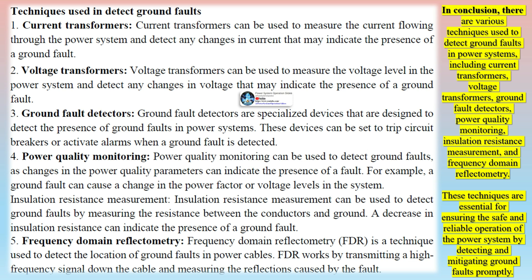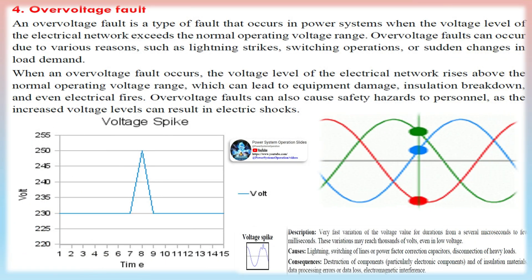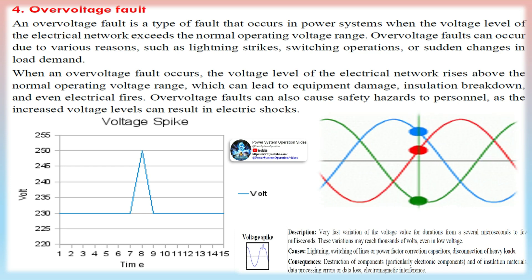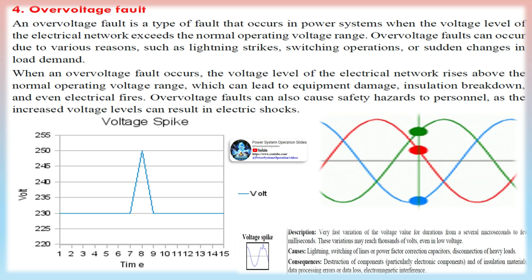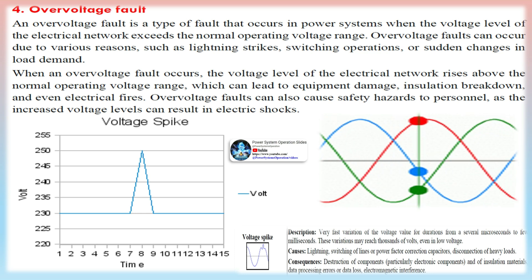In conclusion, there are various techniques used to detect ground faults in power systems, including current transformers, voltage transformers, ground fault detectors, power quality monitoring, energy monitoring, insulation resistance measurement, and frequency domain reflectometry. These techniques are essential for ensuring the safe and reliable operation of the power system by detecting and mitigating ground faults promptly.